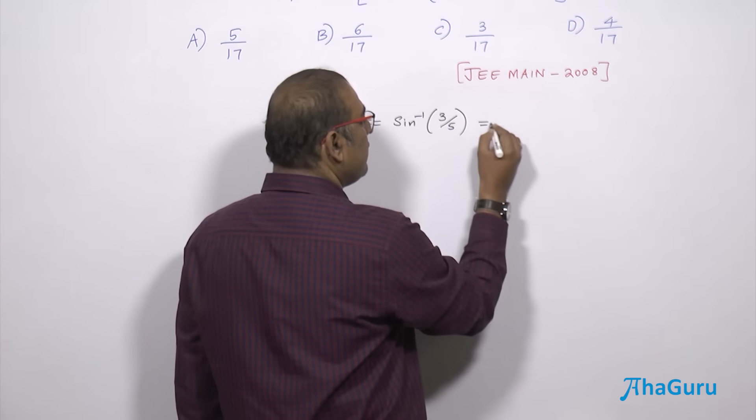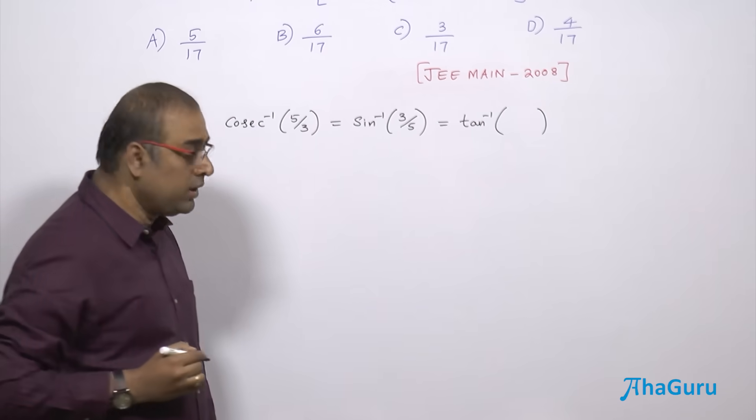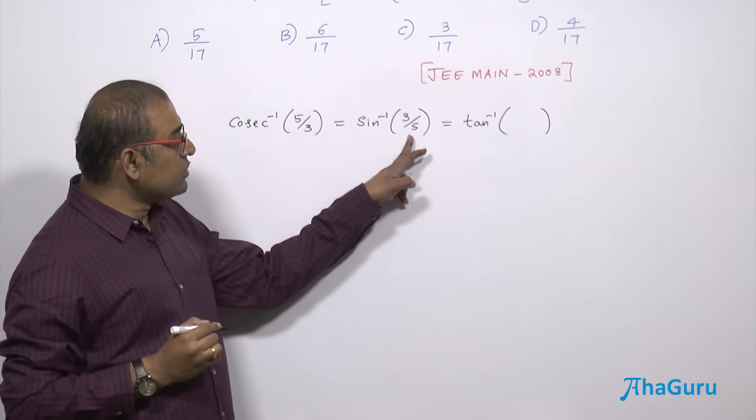If you want, you can convert this to tan inverse, but the point is whether it is going to be negative or positive. Tan inverse of sine inverse of 3 by 5—sine inverse is going to in the fourth quadrant.